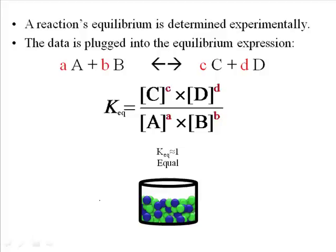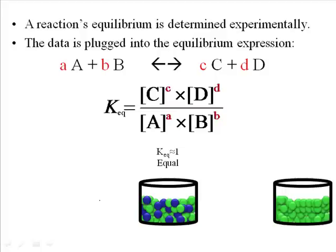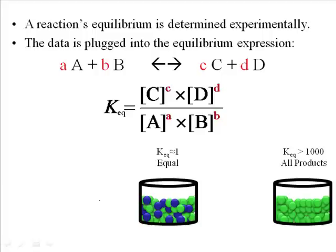Your amounts of reactant and product being roughly equal can happen in chemical equilibria. But imagine coming back and finding that you had pretty much all product — mostly C and mostly D, with very small or unmeasurable amounts of A and B. In that case, our numerator would be a really big number compared to our denominator, and we'd expect a fairly large Keq value — usually greater than 1,000 at the very least — meaning you have mostly products.